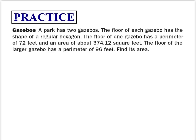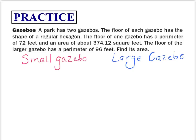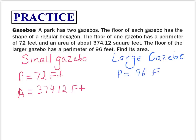Let's talk about gazebos. In this problem, a park has two gazebos — a small gazebo and a large gazebo. The floor of the small gazebo has a perimeter of 72 feet and an area of about 374.12 square feet. The larger gazebo has a perimeter of 96 feet. The question is: what is the area of the larger gazebo?